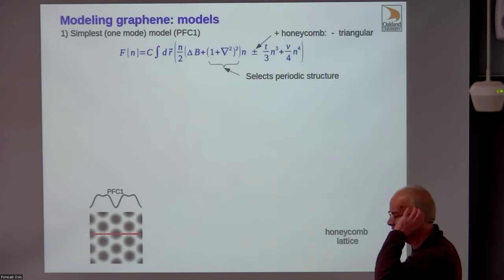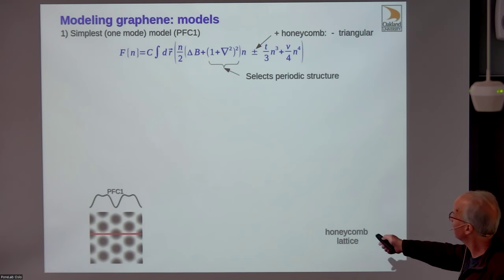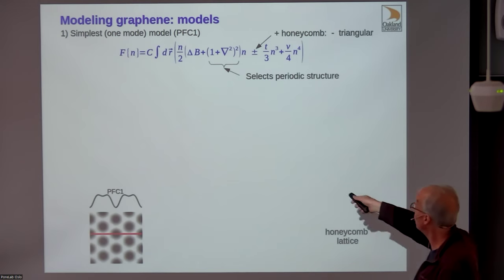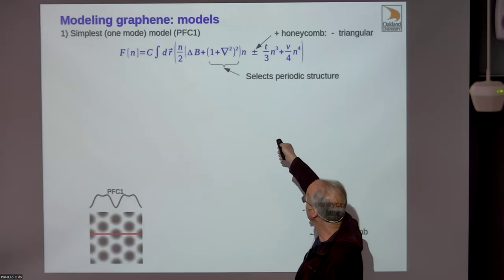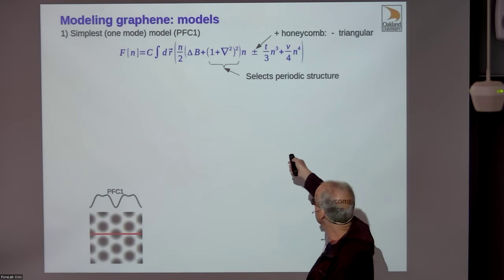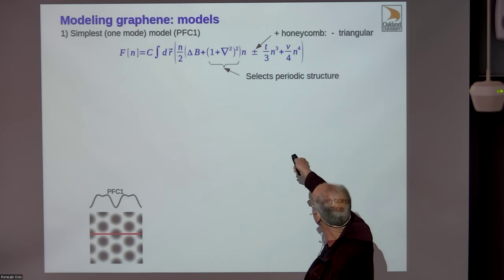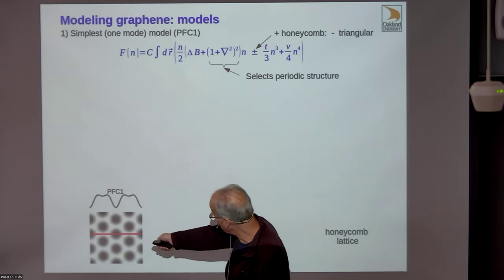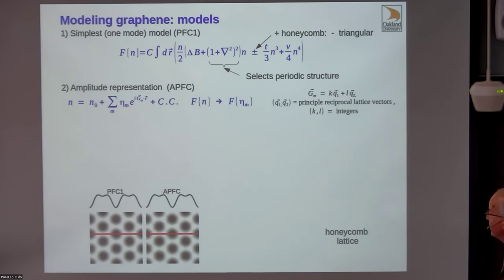Here's a free energy functional—probably the simplest one that produces a periodic structure. A cubic term breaks the up-down symmetry; without it you'd get stripes whose wavelength is determined by the gradient term. The cubic term breaks stripes into dots. A minus sign produces a triangular pattern; a plus sign produces a honeycomb pattern. So this is our model of graphene—the maxima form a honeycomb structure, though they're very hard to see.